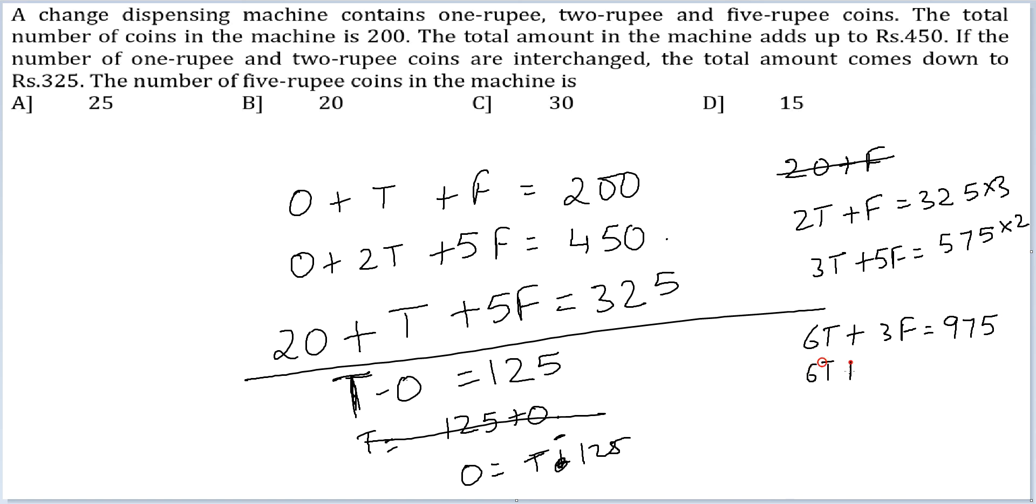And 6T plus 10F equals 1150. Subtracting these equations, 7F equals 175, so F equals 25.